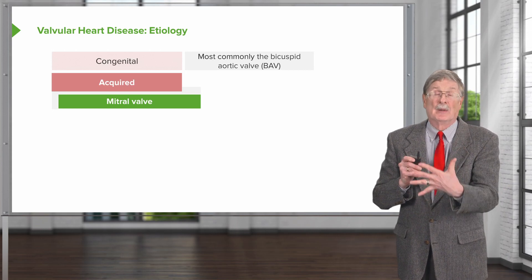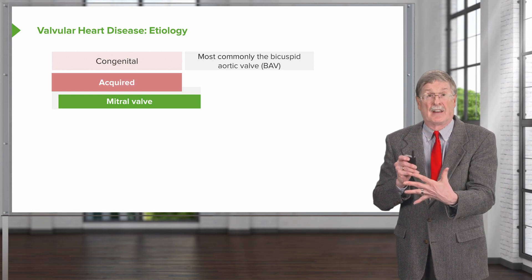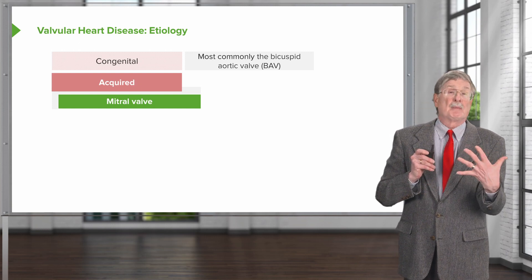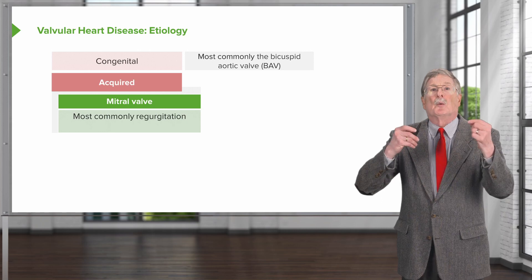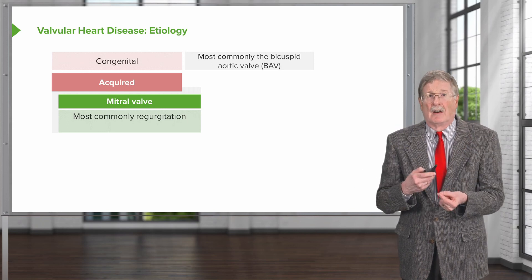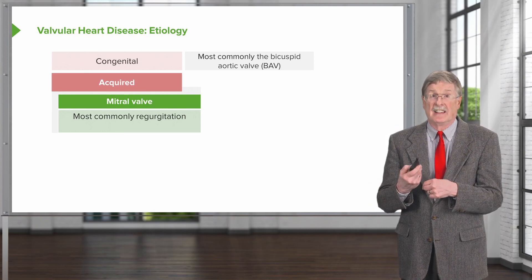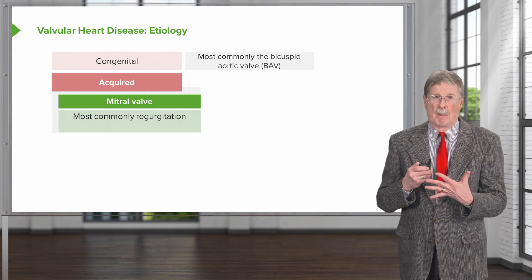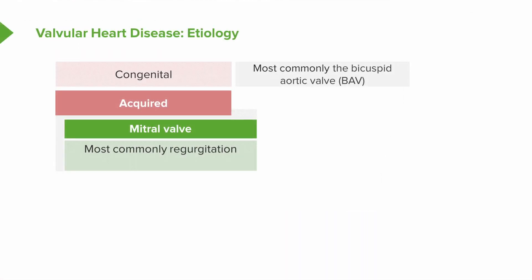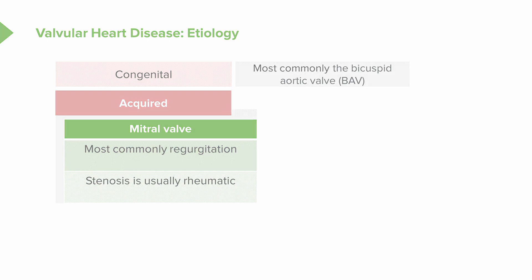Second behind the mitral valve is going to be the aortic valve. Third is going to be the tricuspid valve, and the pulmonic valve is very rarely affected. When the mitral valve has acquired disease, the most common acquired disease is regurgitation. Stenosis, when it does occur, 85% of the time mitral valve stenosis is rheumatic, and we'll talk about how rheumatic heart disease occurs.